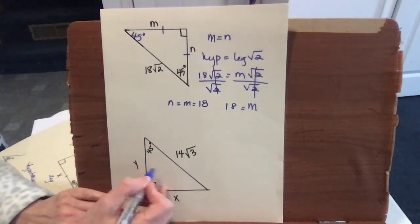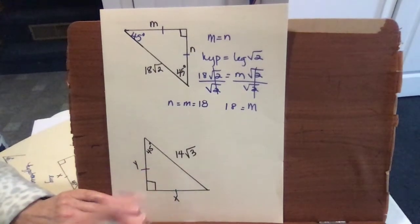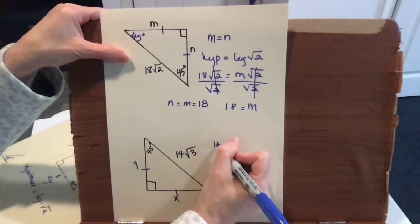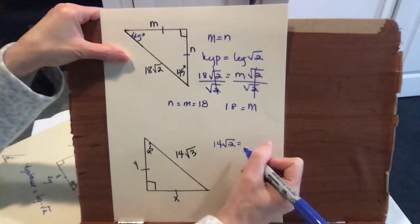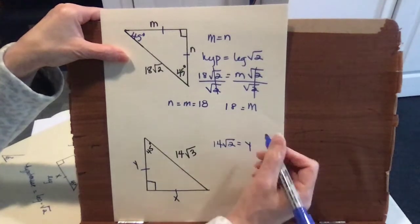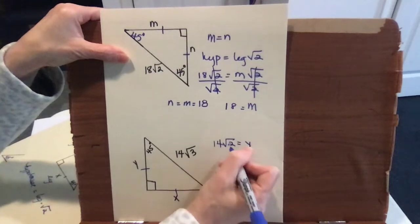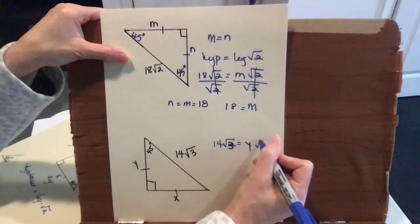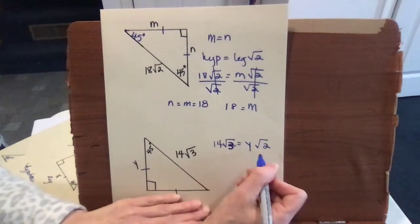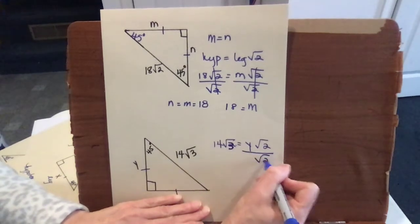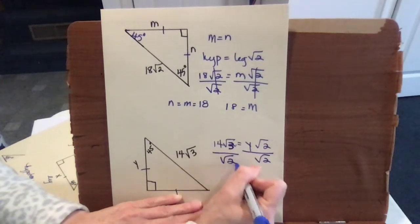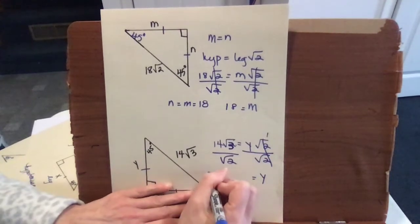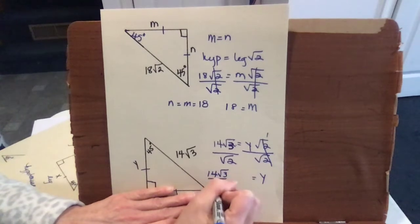We have a 45-45-90 right triangle, so these two sides are equal and we're given the hypotenuse. The hypotenuse equals the leg times radical 2, so I'll choose Y for the leg: hypotenuse equals Y times radical 2. We divide both sides by radical 2 to solve for Y, giving us Y equals 14 root 3 over radical 2.